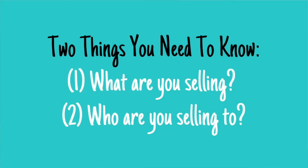Two things you need to know when developing a product or service. The first one is: what are you providing a solution for? What's the solution you're providing — so what are you selling? The second thing is: who are you selling to? Who is your ideal customer? We talked about this in the last video — you want to have your customer persona down. So if you know what you're selling and you know who you're selling to, then the rest should be easy.